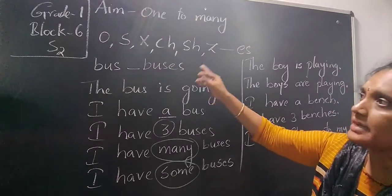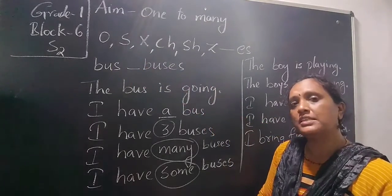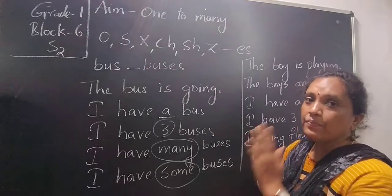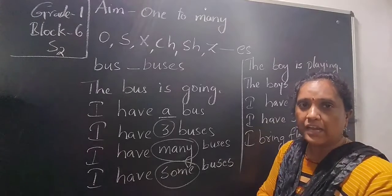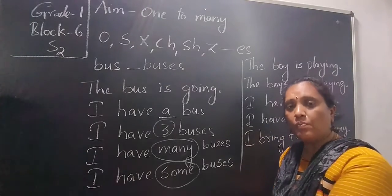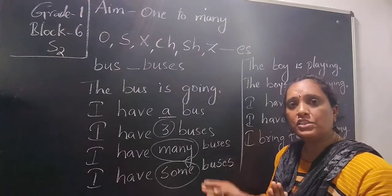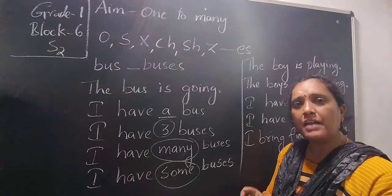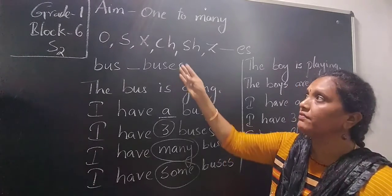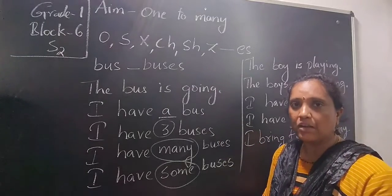In the same way, you have the O-E-S rule: potato becomes potatoes, as we discussed in your previous class. Whatever words are given, try to change them into plural form — change one into many. Try to write and collect many words ending with these letters so that you can improve your vocabulary.